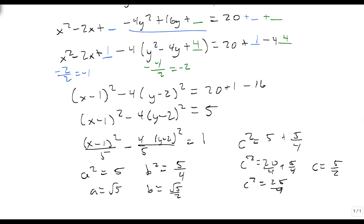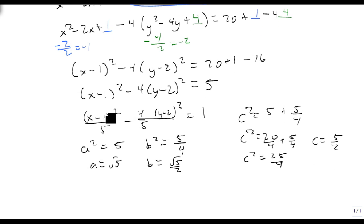We would have a center at 1, 2. That's our center. And of course, we'd get our asymptotes at y minus 2 equals the square root of 5 over 2 divided by the square root of 5, which turns out to be 1 half, plus or minus x minus 1. So there's our asymptotes.